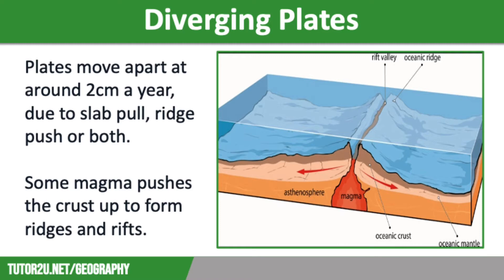Constructive Margins often have very young rock because new crust forms when magma, caused by the upper mantle melting, rises to the surface and fills the gap created by the plates moving apart. This magma then cools and solidifies to form a new lithosphere. The new material sometimes fractures as it moves, which causes shallow but small earthquakes.